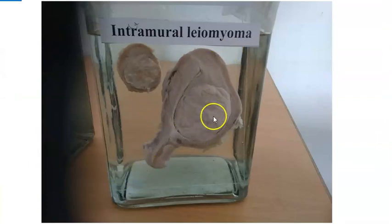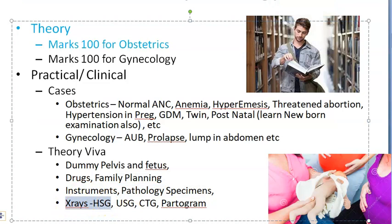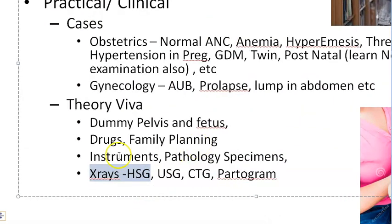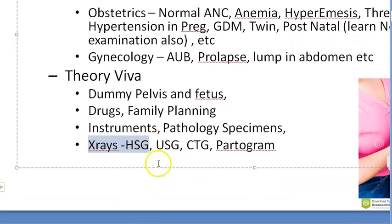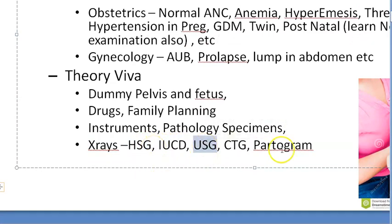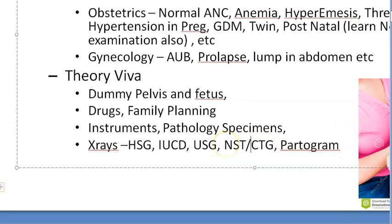For X-rays, they will typically show a hysterosalpingography image, or a misplaced copper T or some intrauterine contraceptive device that has gone and hidden somewhere. They can also show you ultrasound images of a normal or abnormal fetus - for example, spina bifida or Arnold-Chiari syndrome, which is a neural tube defect.